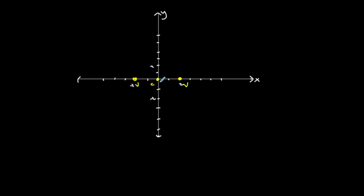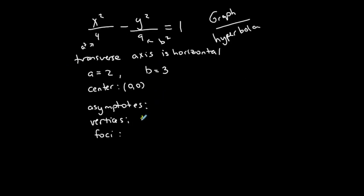So they're x-intercepts in this case only because of the situation. So my vertices, plus or minus 2, 0. Okay, I have those.